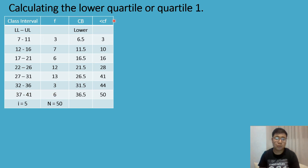Now we compute the less than cumulative frequency. We start at the first class (7 to 11, frequency 3, lower boundary 6.5). Copy the frequency of the first class: 3. Then 3+7=10, 10+6=16, 16+12=28, 28+13=41, 41+3=44, 44+6=50.